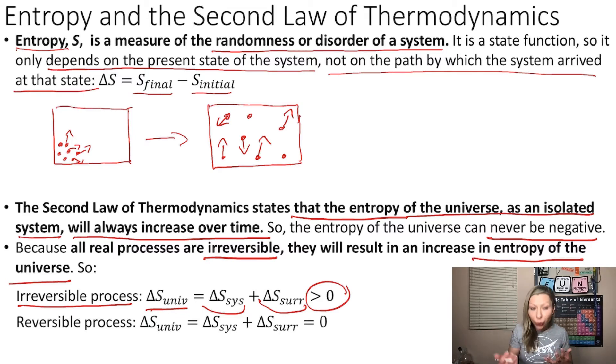For a reversible process, however, the change in entropy of the universe equals the change in entropy of the system plus the change in entropy of the surroundings. And this will equal zero, but it can never be negative. I hope this makes sense.